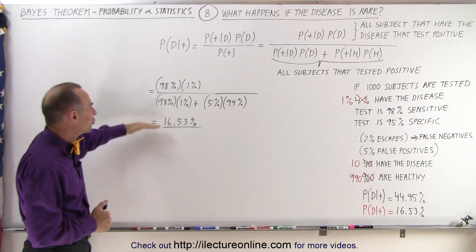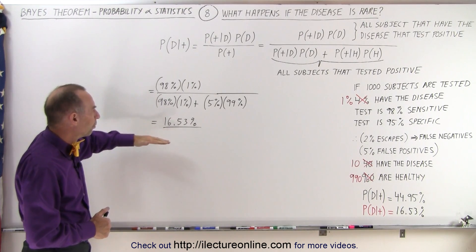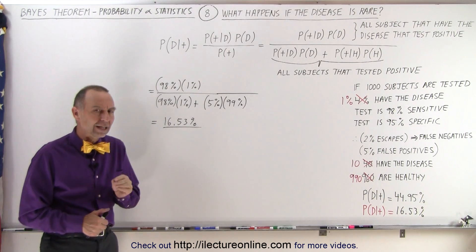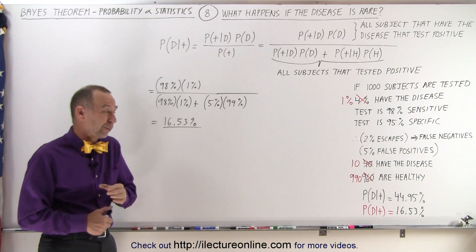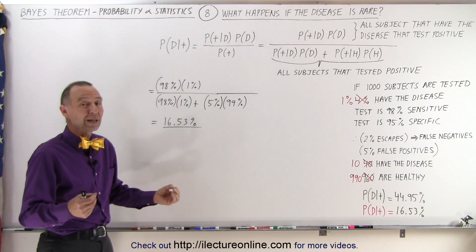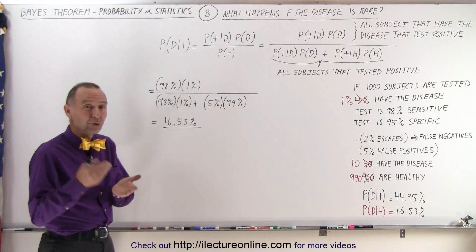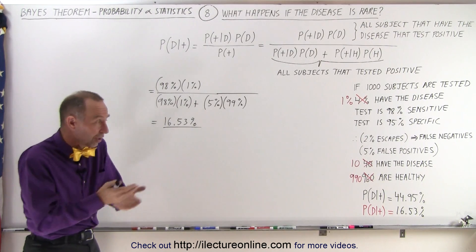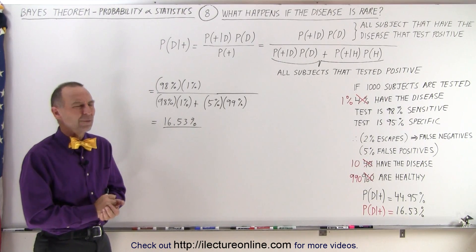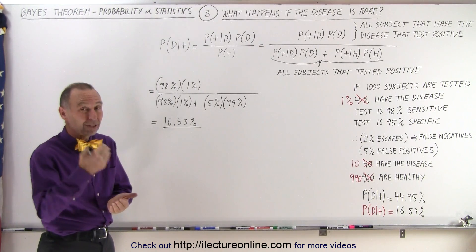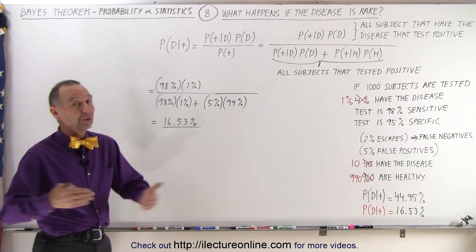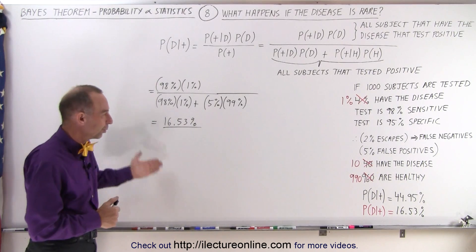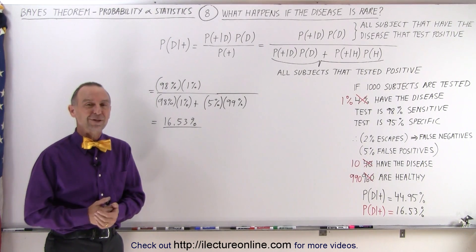Now let's say this drops to 0.1%, 0.01%, or 0.001%. If the condition is very, very rare — say one out of a million people have it — the probability that someone who tests positive actually has the disease will probably be very low. We should probably do one more video bringing the numbers even lower just to see what that would look like. So stay tuned and we'll try another one in the next video.